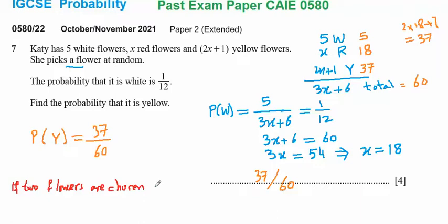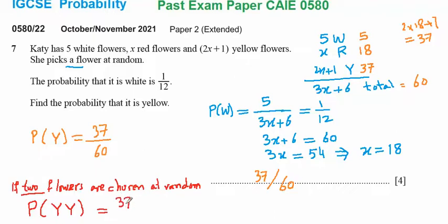When two flowers are chosen at random — randomly meaning without preference — the probability the first is yellow is 37/60. For the second, since one yellow has been removed, it is 36 over 59. Multiplying these two gives a final answer of 111 over 295.